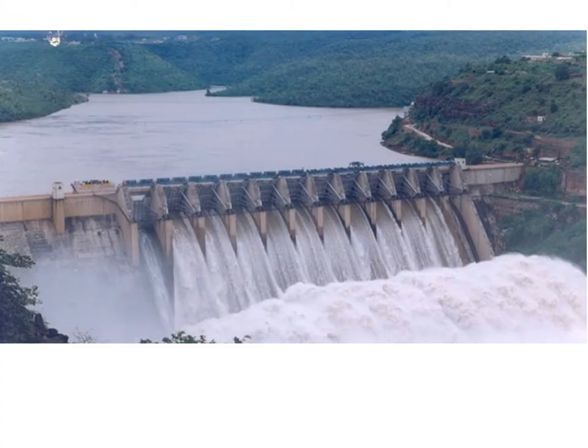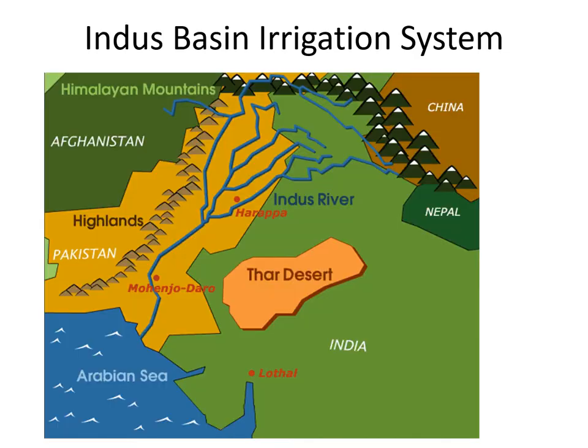Irrigation can be on a number of scales. This picture here is a dam that has been made across a river, and behind that dam is a huge reservoir full of water. They create these dams and reservoirs in order to then make channels that will go from that reservoir to different parts of the country, which will then supply the water to be used for irrigation. That would be a very expensive project, unlike the watering can that you saw in the previous image.